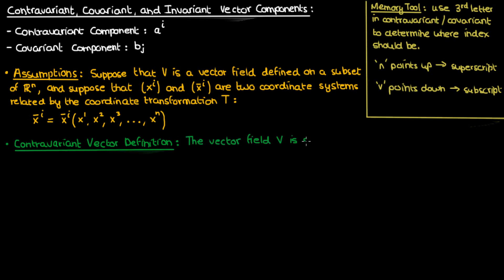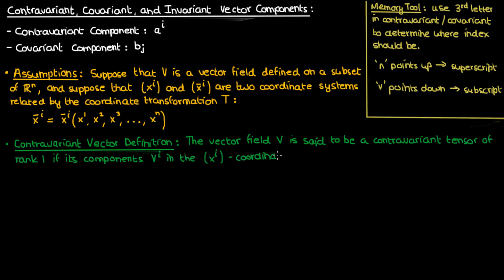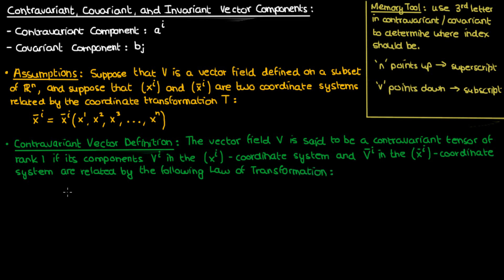The vector field v is said to be a contravariant tensor of rank 1 — so a contravariant vector — if its components v super i in the xi coordinate system and v super i bar in the xi bar coordinate system are related by the following law of transformation: v super i bar equals v super r times the partial derivative of xi bar with respect to xr, where i is an index that varies from 1 to n. Note that r is the dummy index on the right-hand side because it occurs twice, so r is being summed over from 1 to n on the right.